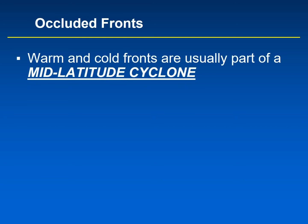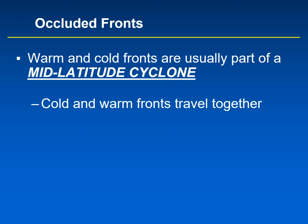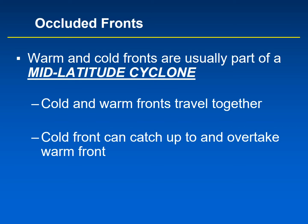Occluded fronts are a result of a cold front catching up to a warm front. Warm and cold fronts are usually part of a mid-latitude cyclone and they travel together. Eventually, the cold front can catch up to and overtake the warm front because it travels at a faster speed. Where the cold front has reached the warm front is called the occlusion. The occluded front is drawn as a purple line with filled-in semicircles and triangles pointing the same direction.